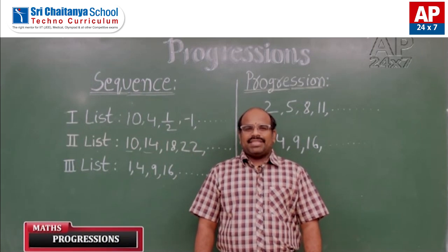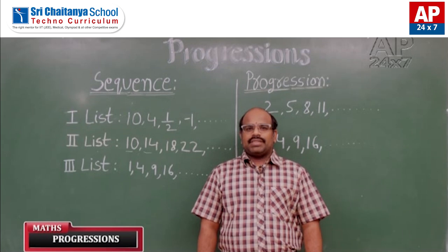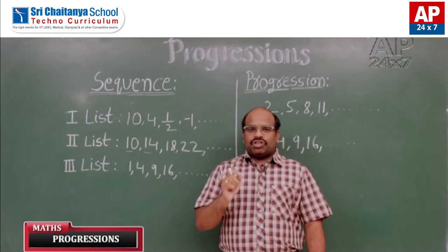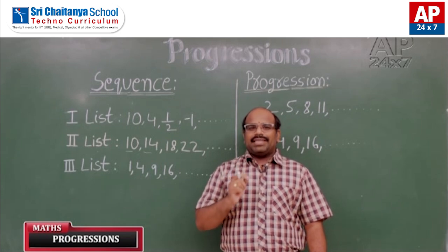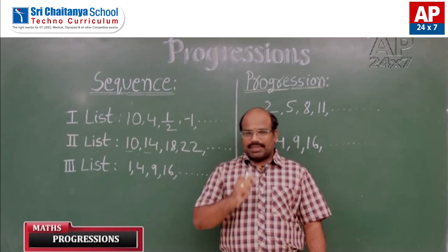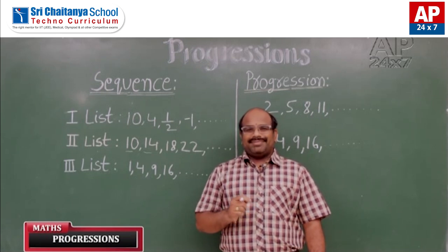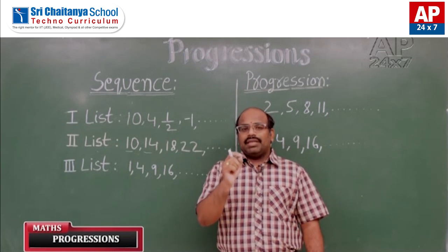Hi students, my name is Ravikumar, working as a mathematics faculty in Sri Chaitanya schools. Today, I would like to discuss one of the easiest chapters in mathematics: progressions. This chapter's weight in CBSE board examinations, AP board examinations, as well as Telangana board examinations is around 6 marks. This chapter is also very useful in all kinds of competitive examinations involving numerical ability questions.